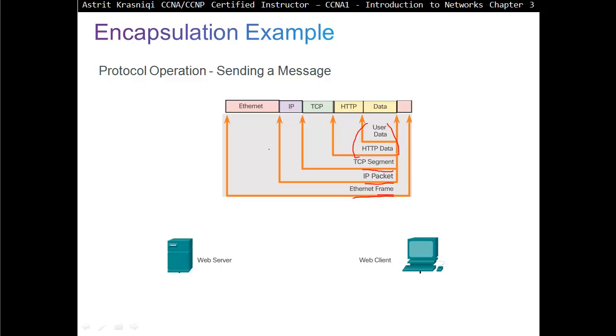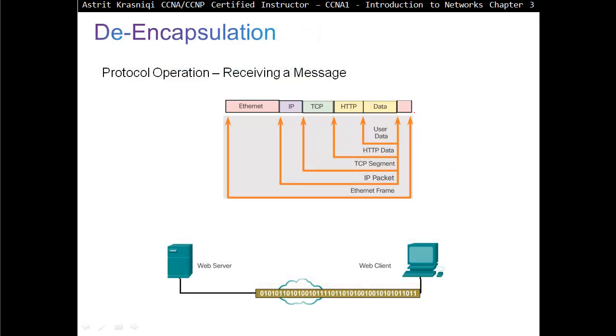Data link layer is going to add ethernet like MAC address source, MAC address, physical address of the destination. As well as it's going to add the frame check sequence. So as the data goes to the destination, the first thing the destination is going to look, is going to make sure that this packet has not been corrupted. It's going to check the frame check sequence.